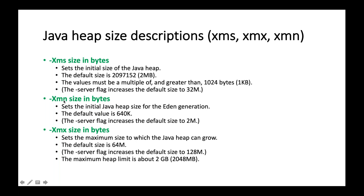Now let's talk about XMX. XMX is for the maximum size for the Java heap. The default size is 64 MB. The server flag increases the default size to 128 MB that you can define. And the maximum heap limit is about 2 GB.